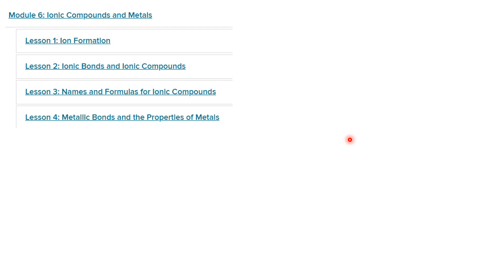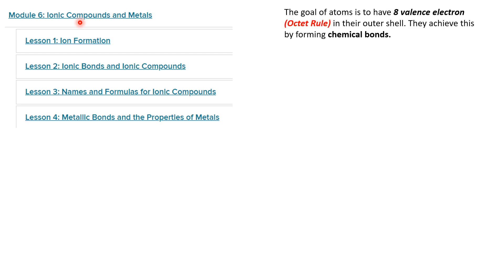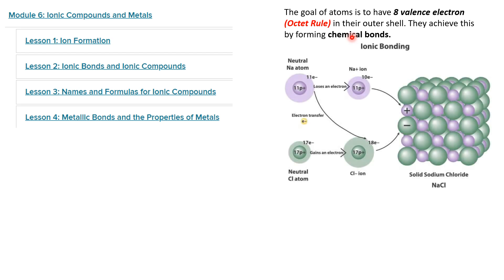Then we moved on to module 6, which was basically about ions and ionic compounds. A famous statement I always shared with my students is that atoms have one goal in life — to have eight valence electrons. If you remember the octet rule: in their highest energy level they need eight valence electrons. They achieve that by forming chemical bonds. We focused on the ionic bond, where one ion is positive and one ion is negative, and they attract — so one atom loses an electron and becomes a positive ion.